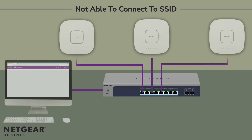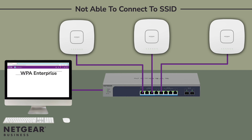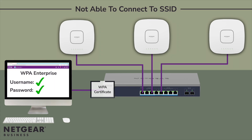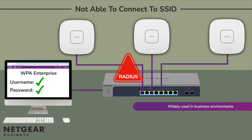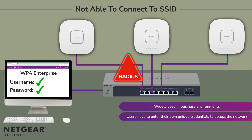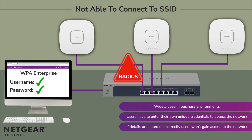Authentication failure commonly occurs when the WPA security encryption settings haven't been correctly applied. If you have set the encryption to WPA Enterprise, make sure the username and password has been set correctly and that the certificate matches between the client and the RADIUS server. WPA Enterprise is widely used over WPA Personal in business environments because it requires users to enter their own unique credentials in order to access the network rather than a standard password. If these credentials are inaccurately entered, they will not be able to connect.